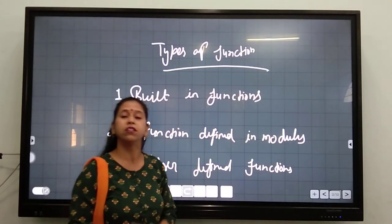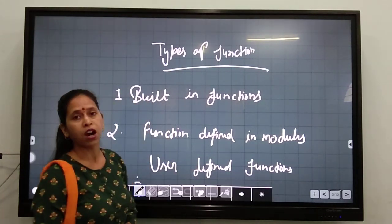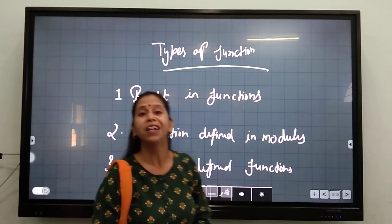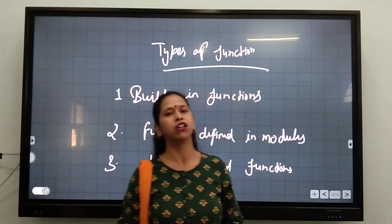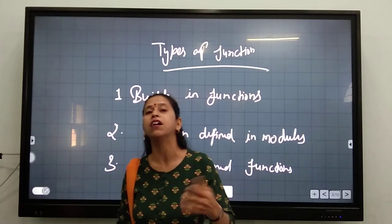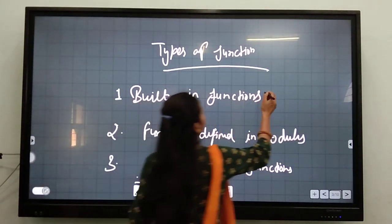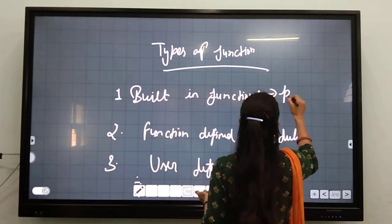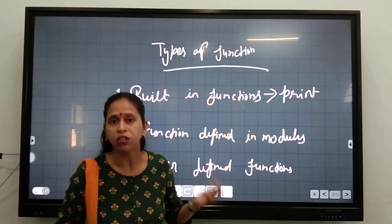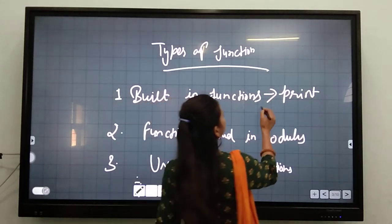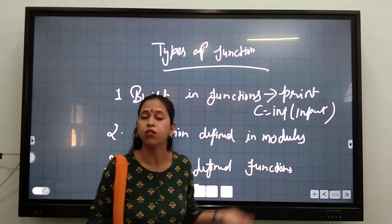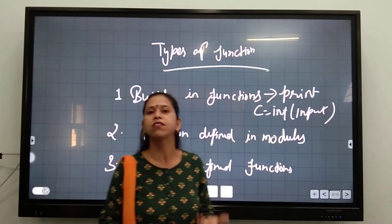Next: types of functions. The first type is the built-in function, which means an inbuilt function — already built into the language. For example, print is a kind of built-in function; when we use this function, the output will appear. Another built-in function is input — when we use it, we can give a value at runtime.